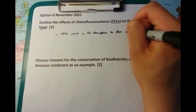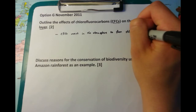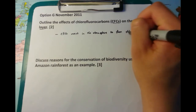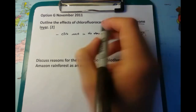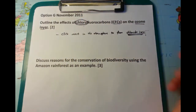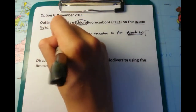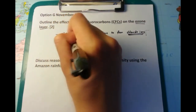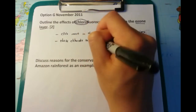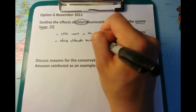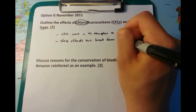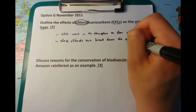What happens with chlorofluorocarbons, which are released from air canisters back in the olden days, is that they react in the atmosphere, and one of the breakdown products is chloride ions — the chloro from the CFCs. These chloride ions break down the ozone, or O3, which is found in the atmosphere.